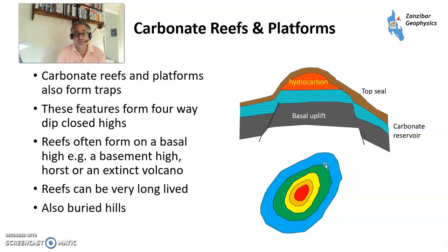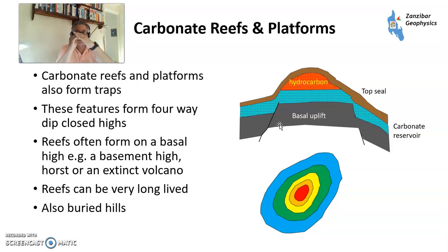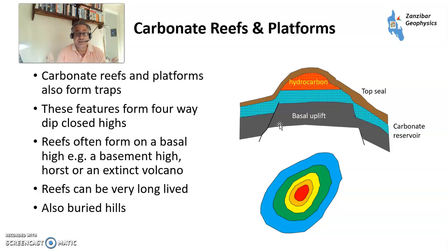Carbonate reefs and platforms can be really massive. Effectively, a reef of different organisms forms limestone or dolomite, typically over the top of a basement high that protrudes slightly above the seabed and reaches the photic zone. These organisms start producing carbonates — the host could be an ancient volcano, for example. Some reefs can be very long-lived, going on for millions of years, such as Karachaganak in Kazakhstan, which I worked on. There are also buried hills where a carbonate platform has been eroded and then covered by new sediment and a top seal.